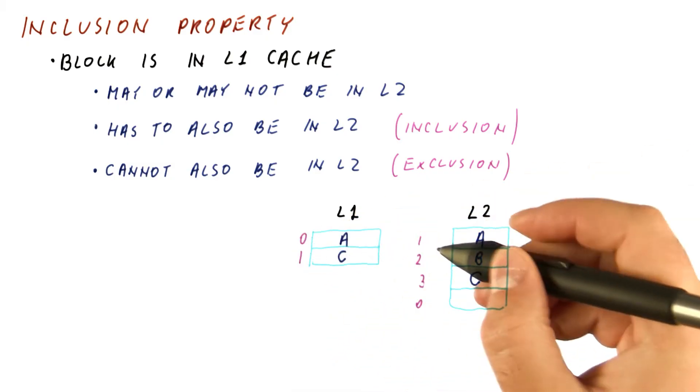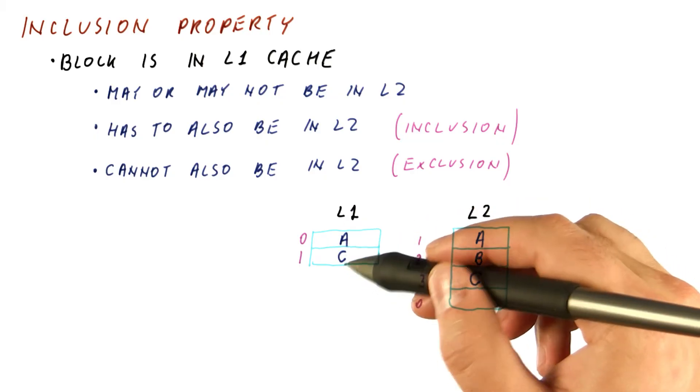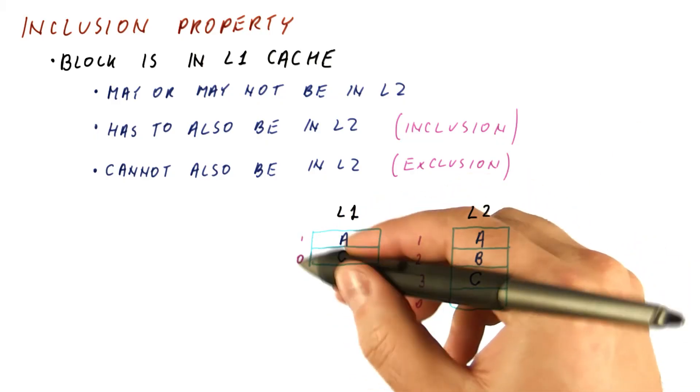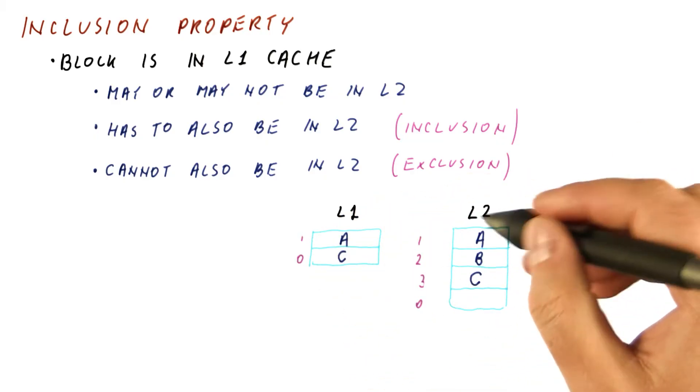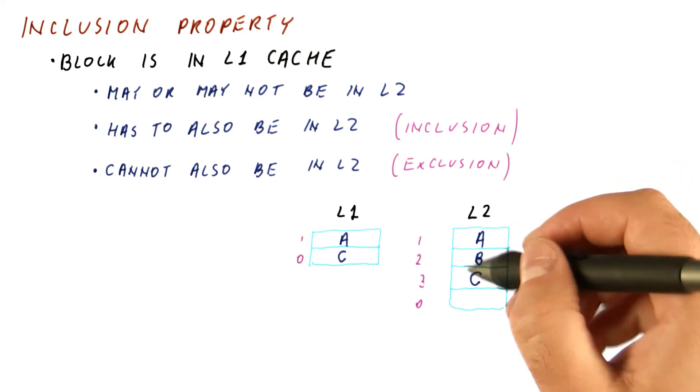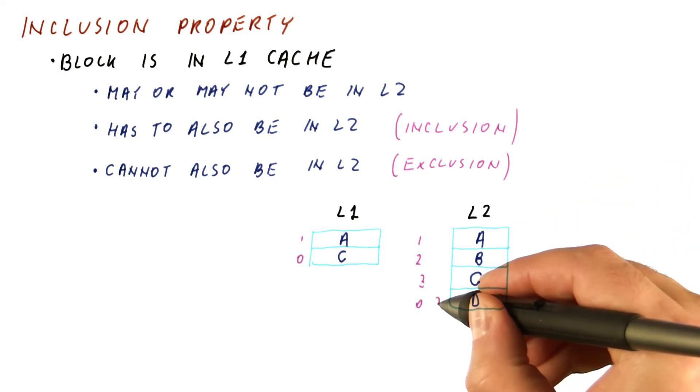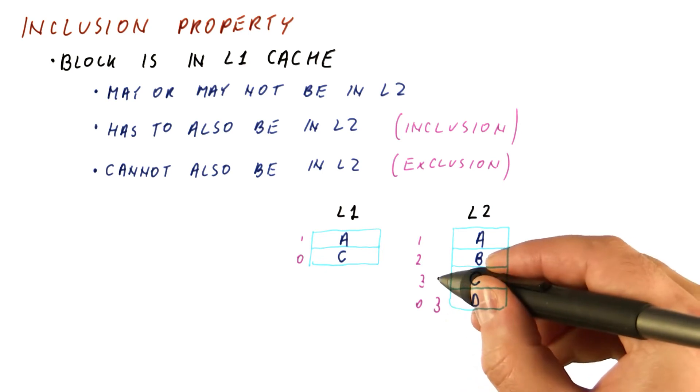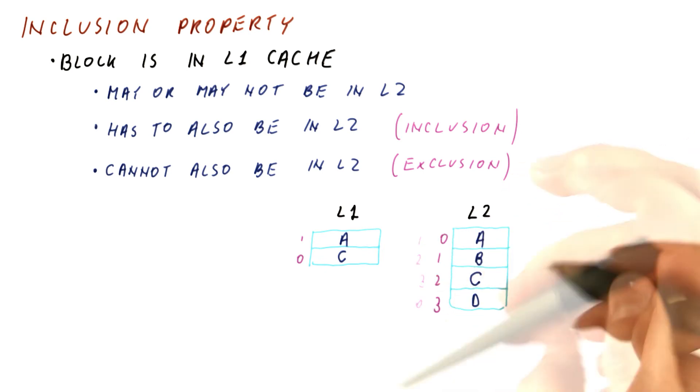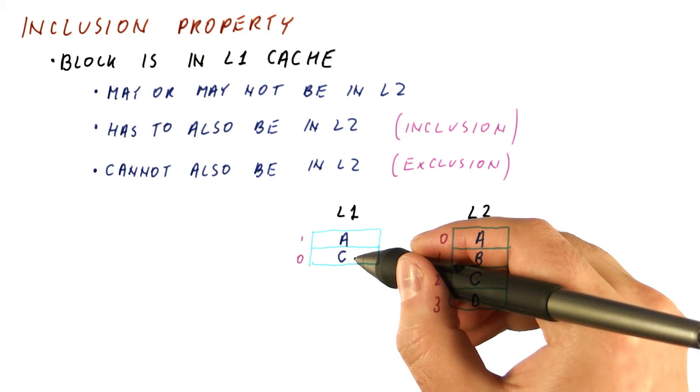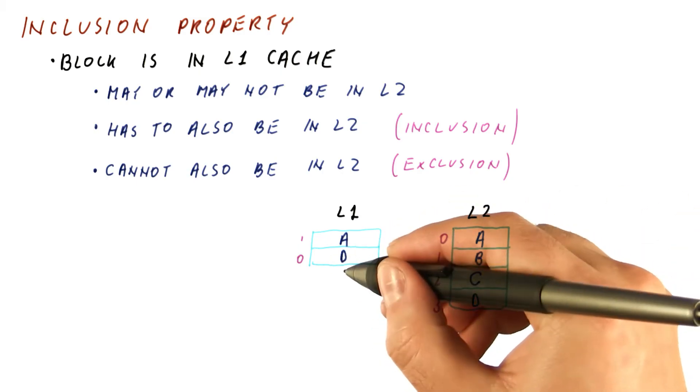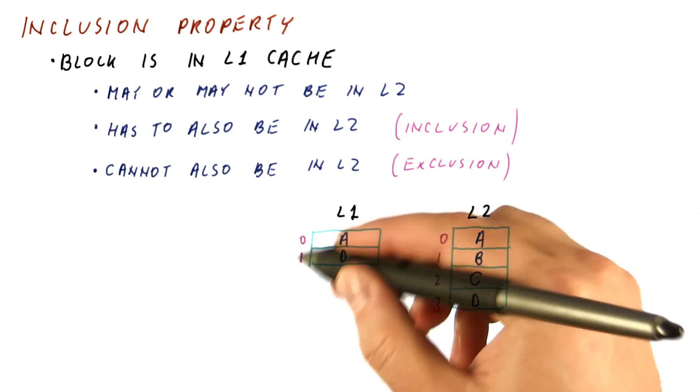Now let's say A is accessed again. That changes the counters back to this, and there is no access to the level two cache. Let's say now we access block D. It's going to be fetched here. The counters are updated to three, two, one, and zero. And D is also brought into the level one cache and placed here. Of course that updates the counters this way.